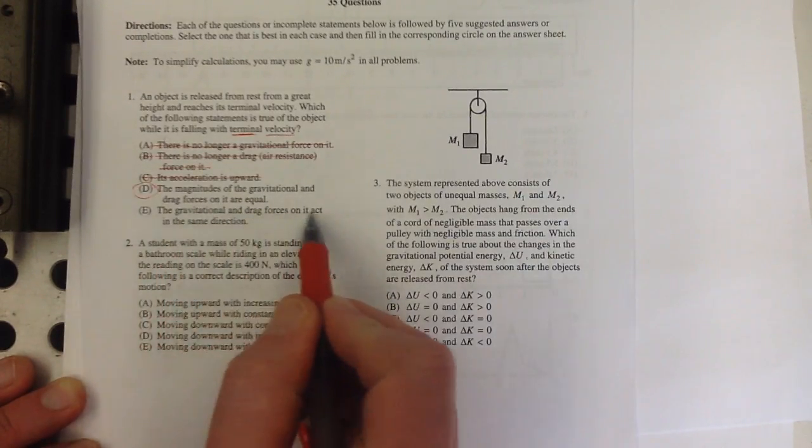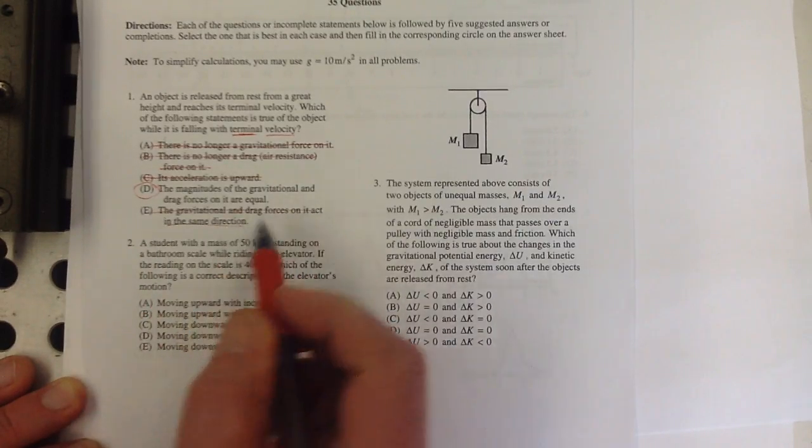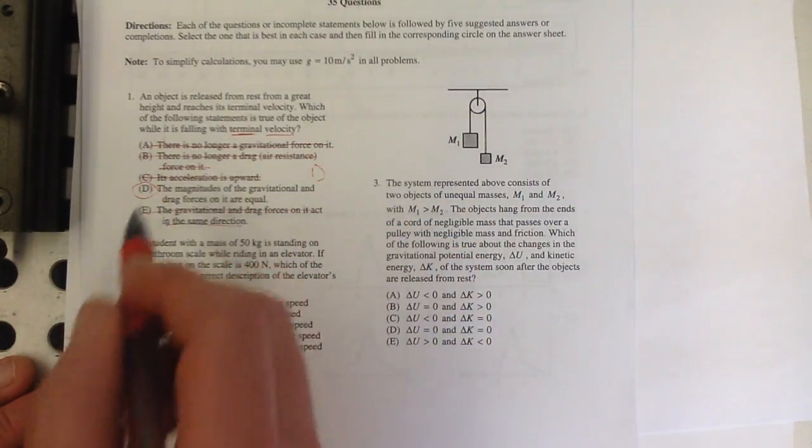Magnitudes of the gravitational and drag forces on it are equal. Yes. Gravitational drag forces act in the same direction? No. That's D, right? Constant velocity, forces are balanced.